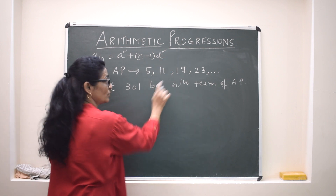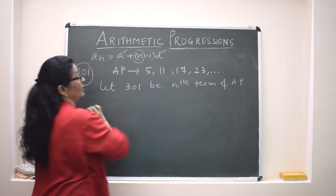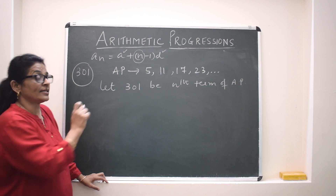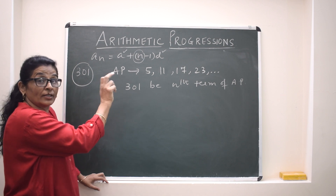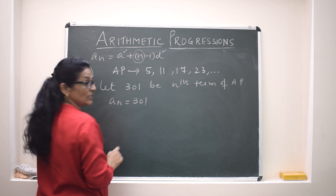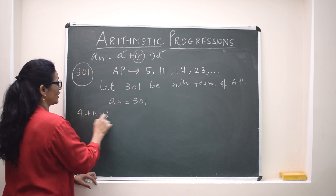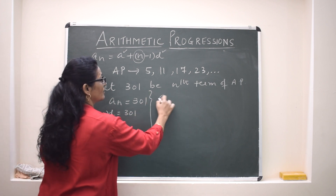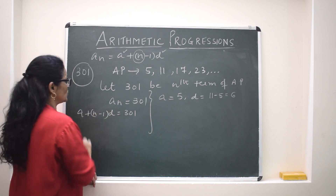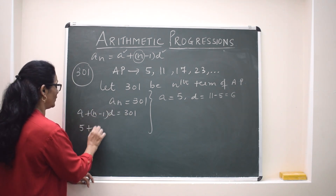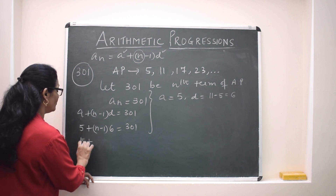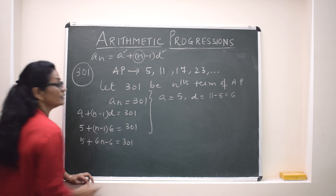We know A and D. So we look for N, and that N should be a positive integer. If it comes out negative or fractional, the number is not a member of the AP. Writing the formula: A + (N−1)D = 301, where A = 5 and D = 11 − 5 = 6. Substituting: 5 + (N−1) × 6 = 301.